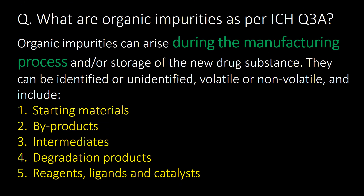What are organic impurities as per ICH Q3A? Organic impurities can arise during the manufacturing process and/or storage of the new drug substances. They can be identified or unidentified, volatile or non-volatile, and include: first, starting material; second, byproducts; third, intermediate products; fourth, degradation products; and fifth, reagents, ligands and catalysts.